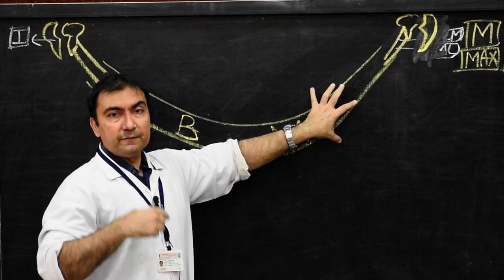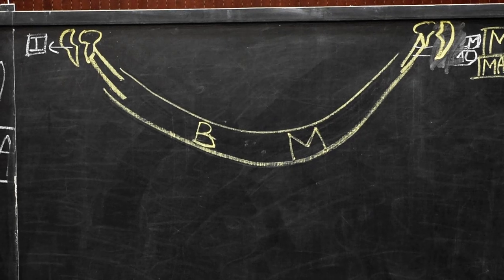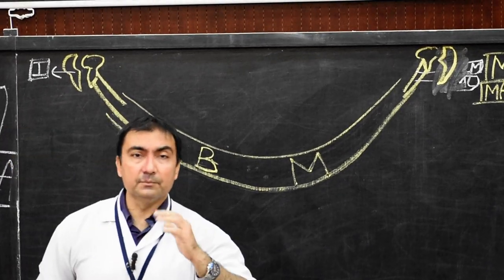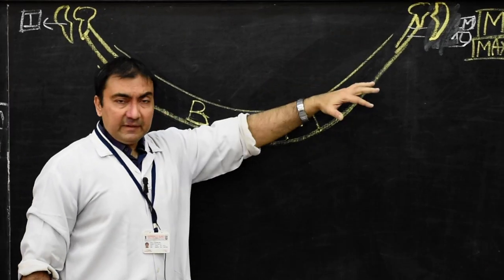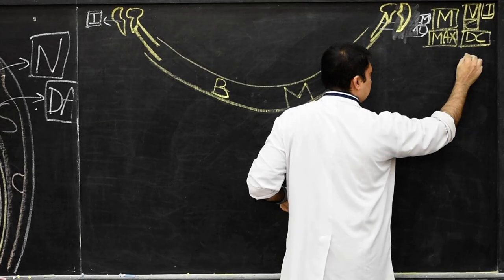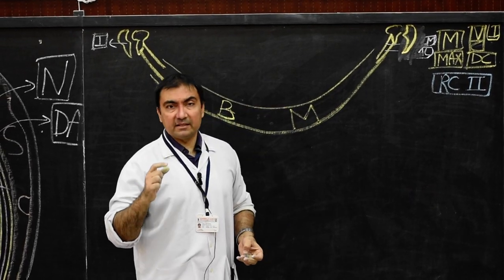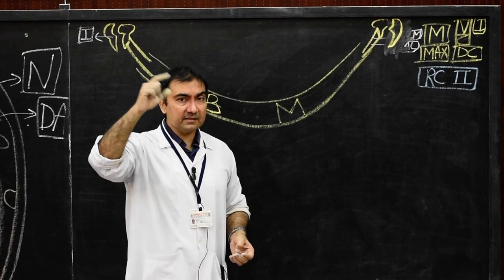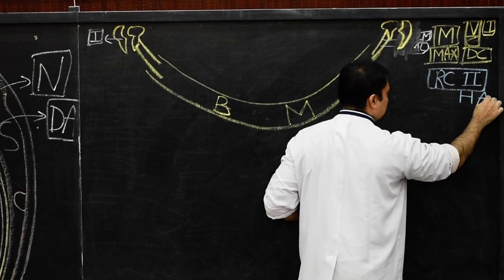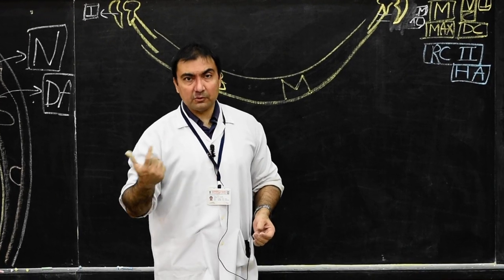Now we come to second arch skeletal derivatives. In the second arch, the cartilage is called Reichert's cartilage — R-E-I-C-H-E-R-T-S. This arch is also known as the hyoid arch. The first arch is known as the mandibular arch. The second arch is called the hyoid arch or Reichert's cartilage, and is again divided into dorsal and ventral components.